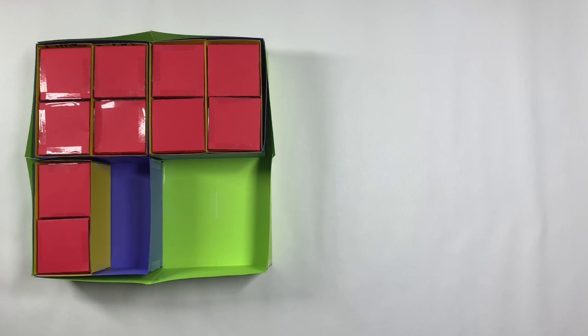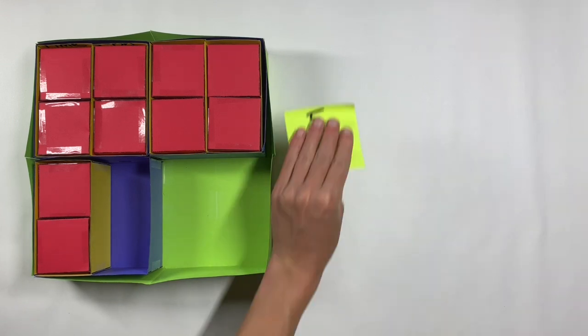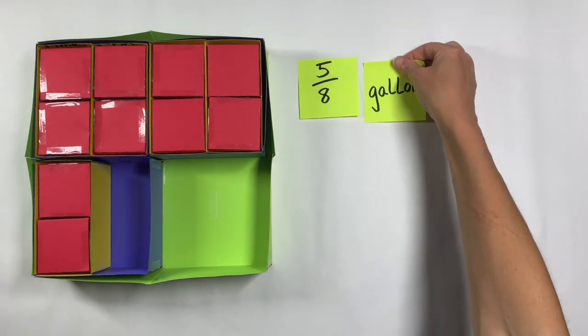This quantity, for example, students might describe as ten cups, five pints, two full quarts and half of another quart. Or they might start looking ahead to the gallon and calling this some fraction of a gallon. And even the fraction that they choose is going to depend on which thing they choose to count. If they choose to count pints, for example, they might call this five-eighths of a gallon.